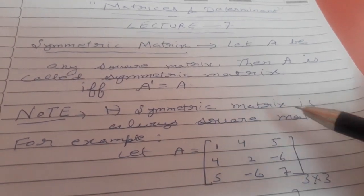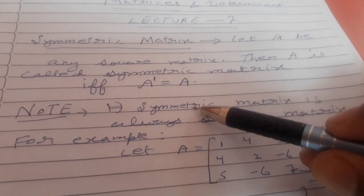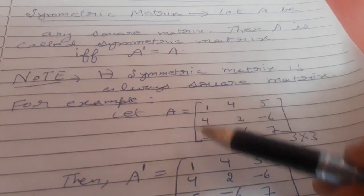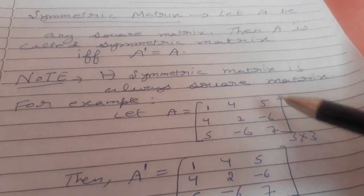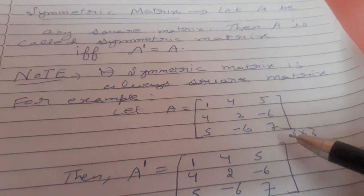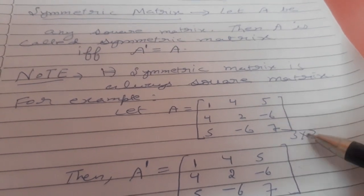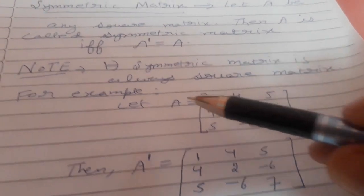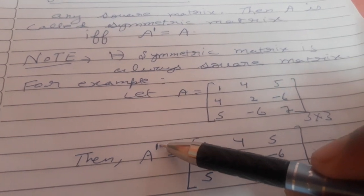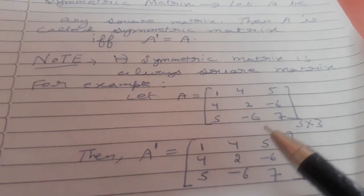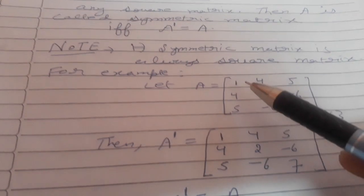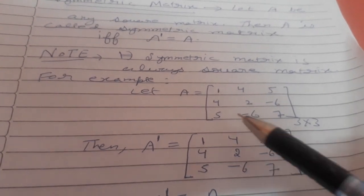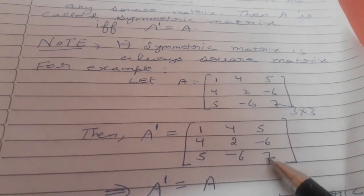A symmetric matrix is always a square matrix. For example, I have a square matrix — a matrix where the number of rows and columns are the same. If I take its transpose by interchanging rows and columns, the first row elements become the first column, second row elements become the second column, and third row elements become the third column.